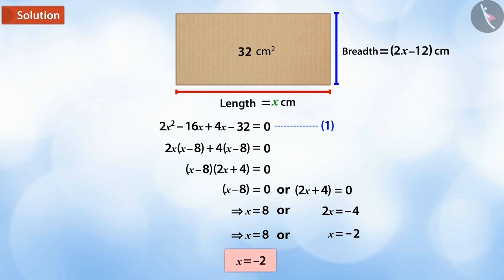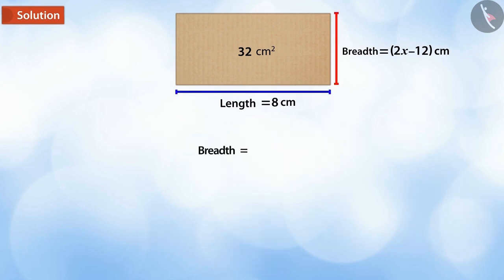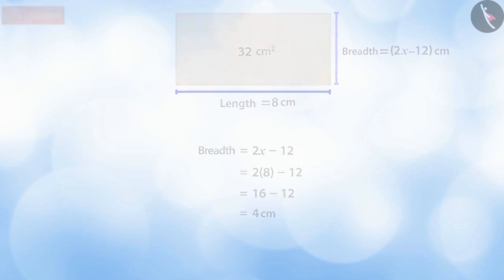Since we are calculating length of a box, it cannot be negative. Therefore, the length of the box would be 8 centimeters, and breadth would be calculated from 2 multiplied by 8 minus 12, which equals 4 centimeters.